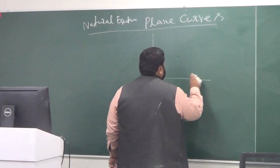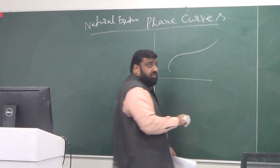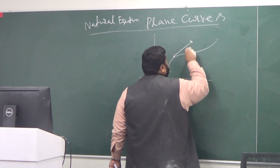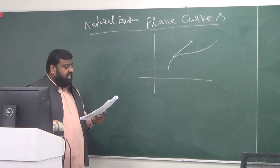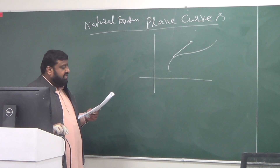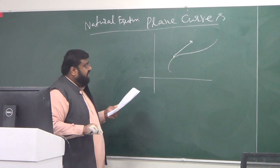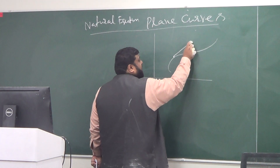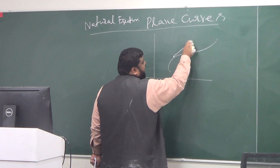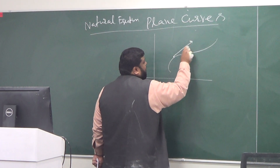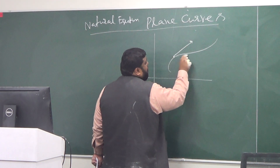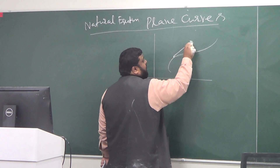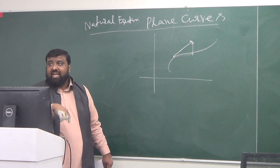Imagine a curve in a plane with a tangent vector. This tangent vector is going to have two components: one component along the x-axis and the other parallel to the y-axis.